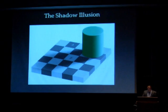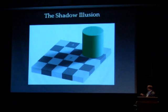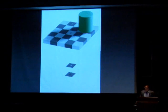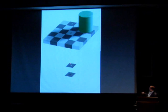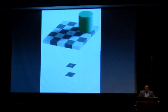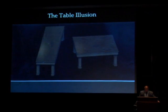For the shadow illusion, what's the difference between these two squares, A and B? And the answer is nothing. They're actually the same shading. It's just that with the context around it, the shading makes it look like they're different.